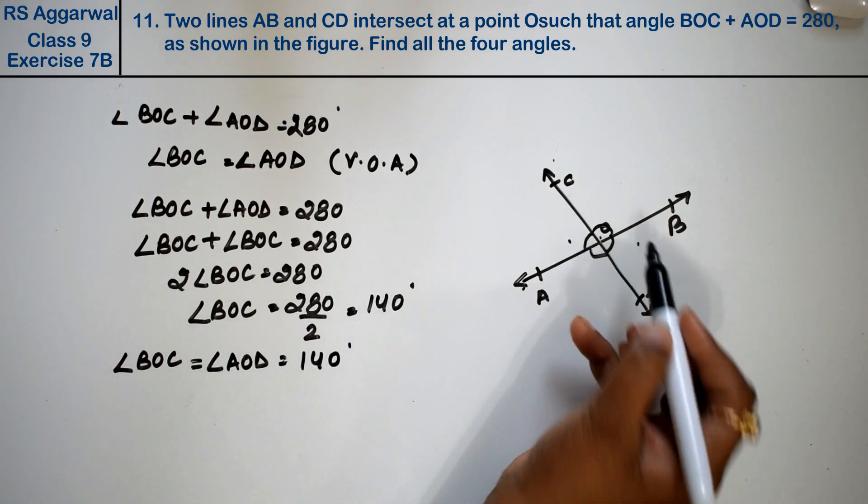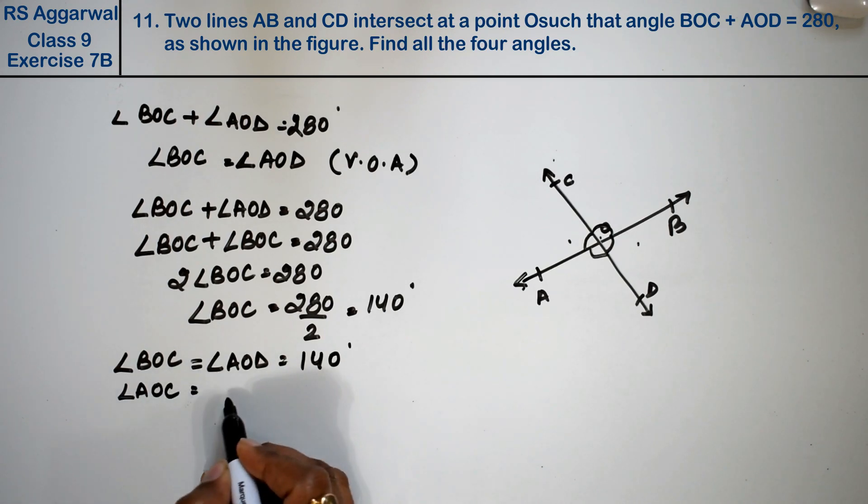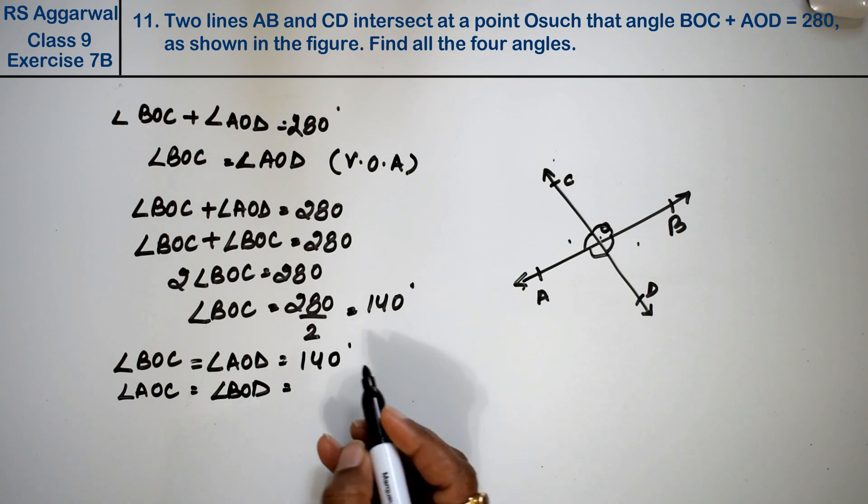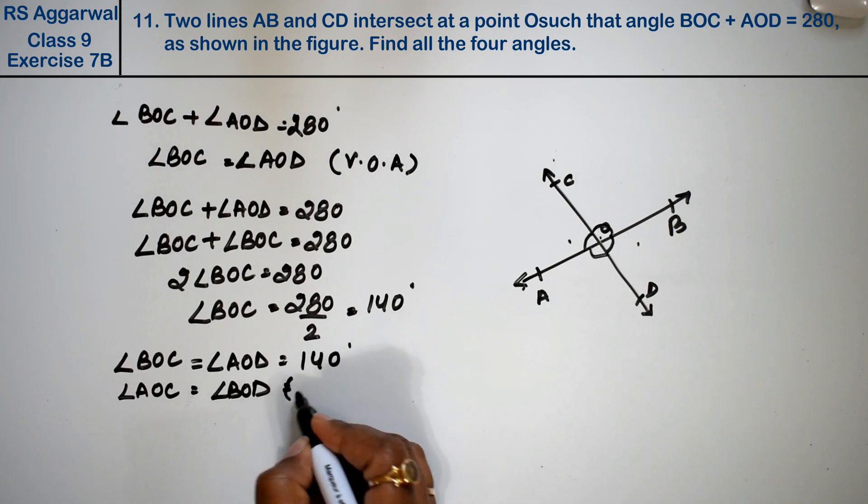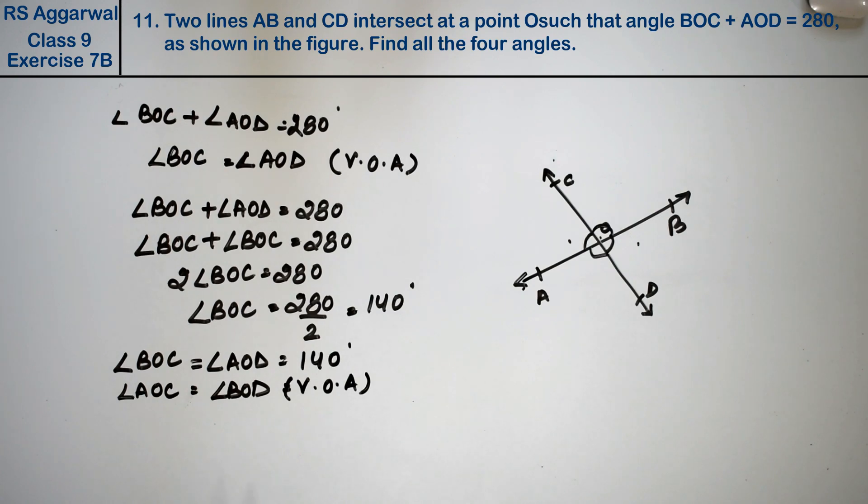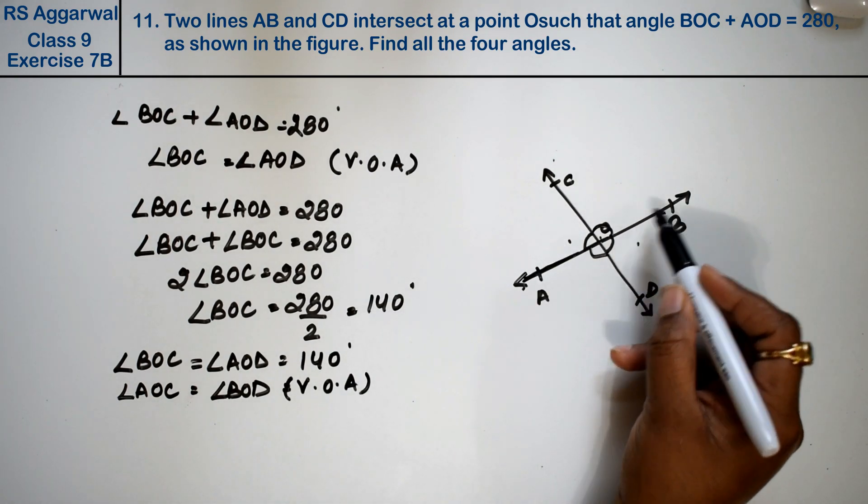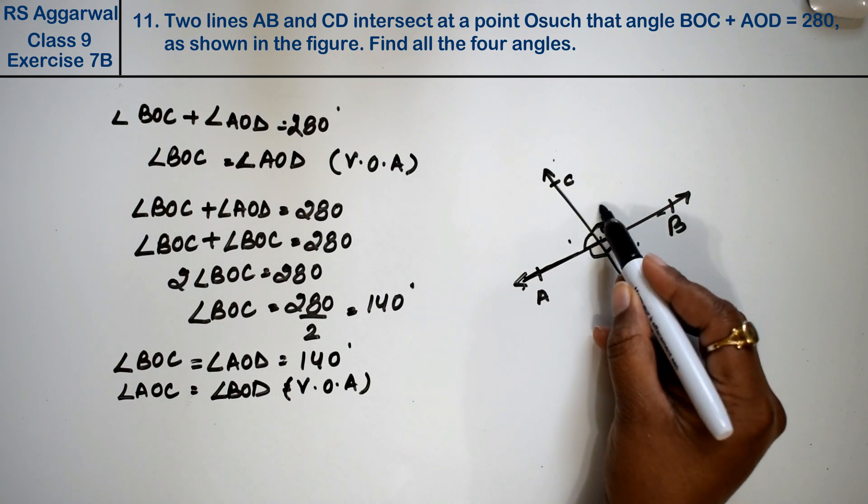Similarly, now angle AOC equals to angle BOD, the same. Because vertically opposite angles are equal. Now let's see, how do we do? This is our straight line, and we know that this is 140 degrees.